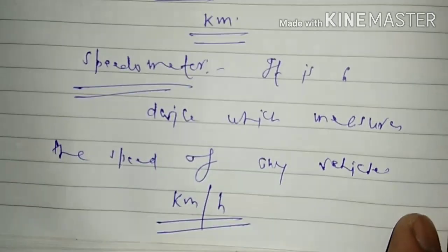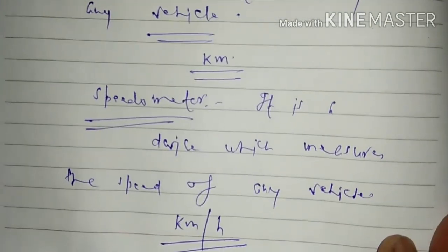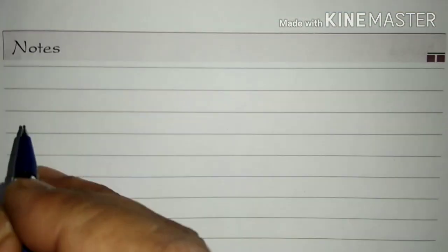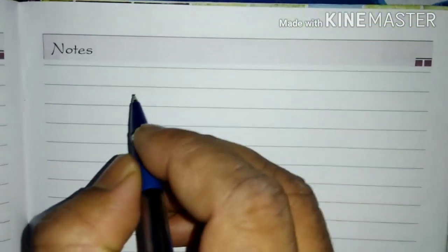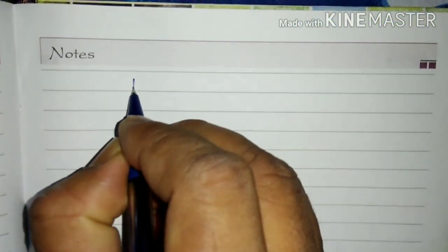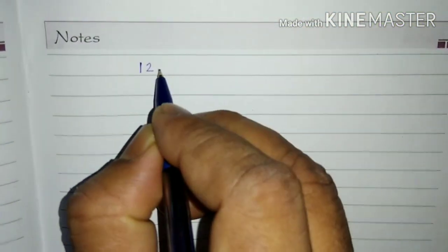So in activity 8.4 this is explained, and now the question arises: how we can use this odometer? So suppose if you start your journey, the reading of odometer is 12,051 kilometers.